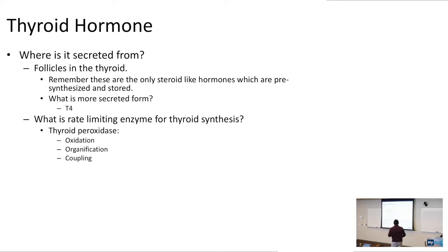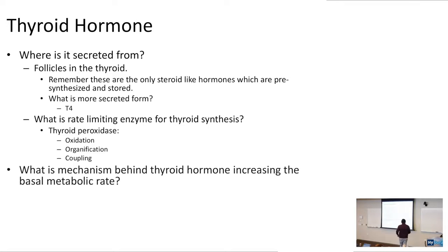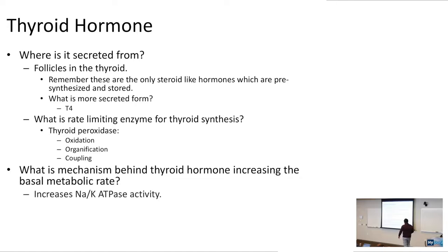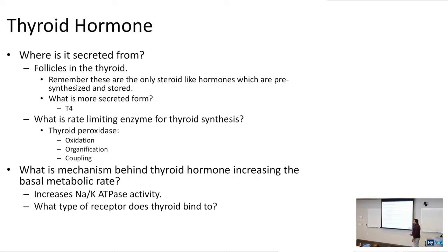What is the mechanism behind thyroid hormone increasing the metabolic rate? Thyroid hormone is going to increase sodium-potassium ATPase activity. Thyroid binds to an intracellular and intranuclear receptor.